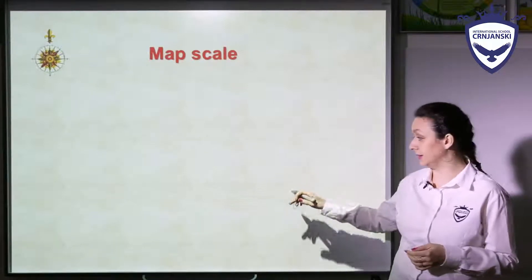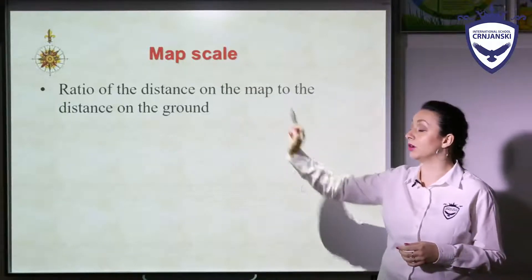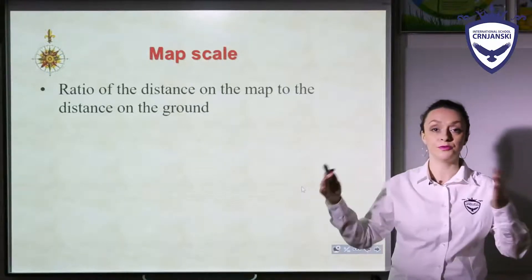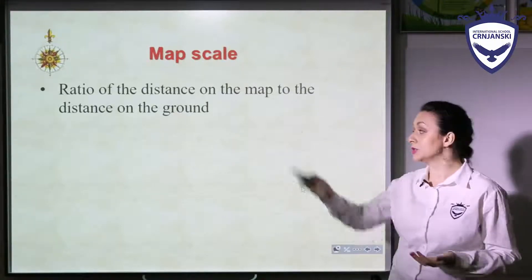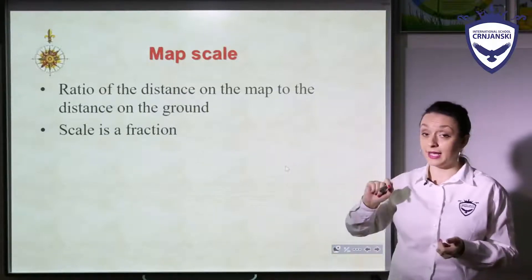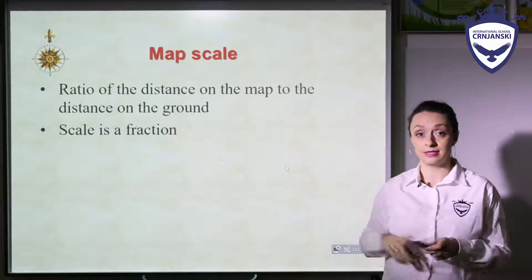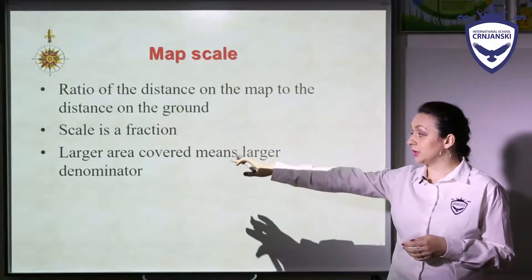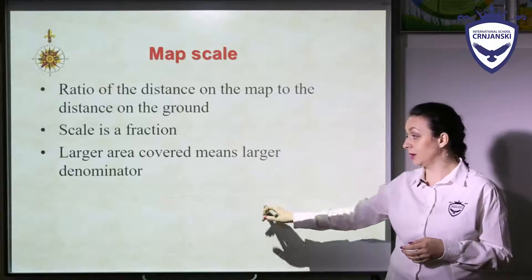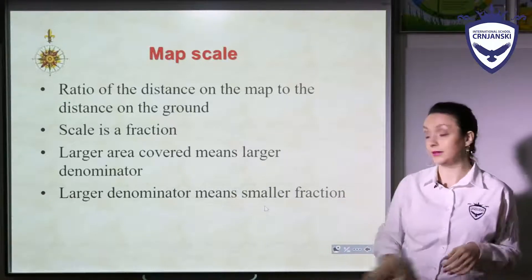What is a map scale? A map scale is the ratio of the distance on the map to the distance on the ground. When I say ratio, I mean the relationship between two things — two places, two amounts, etc. Scale is a fraction, meaning we apply knowledge of fractions here. A larger area covered means a larger denominator, and a larger denominator means a smaller fraction, and vice versa.